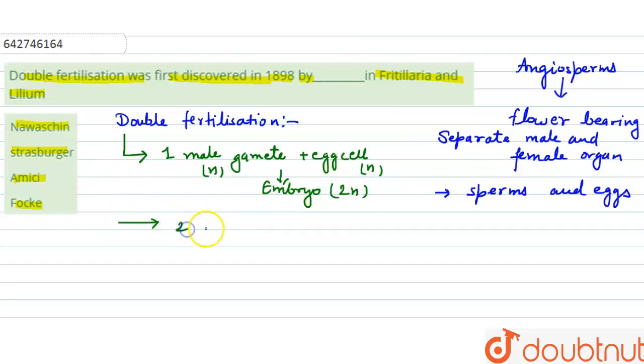will happen: second male gamete fuses with the central cell, the cell that is formed by the fusion of two nuclei. So this is diploid and second male gamete. This is first male gamete and this is second male gamete. This is haploid and this is diploid that will